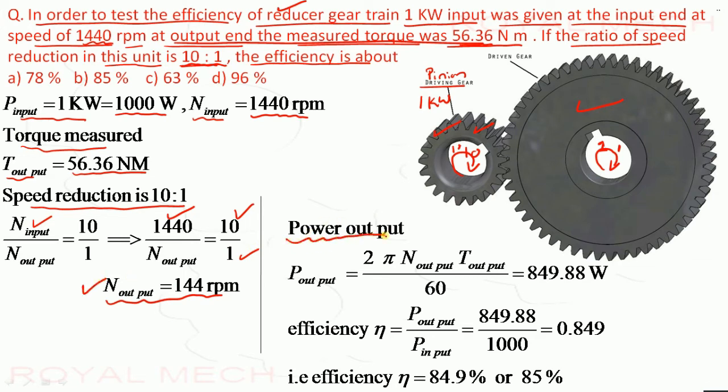Now power output. So we know power equal to 2π Nt upon 60. So we are calculating for the output for this. So 2π Nt for the output upon 60. So we have N already found and torque output is given. So we can calculate power output value.